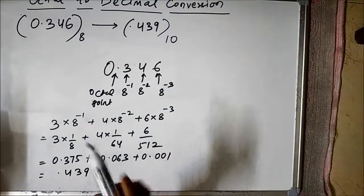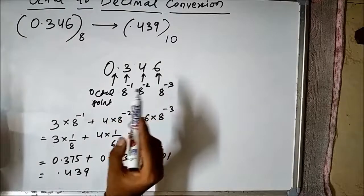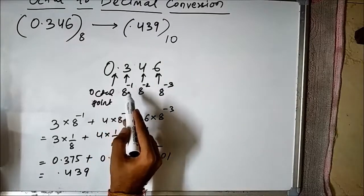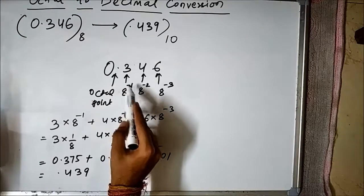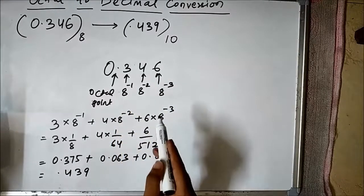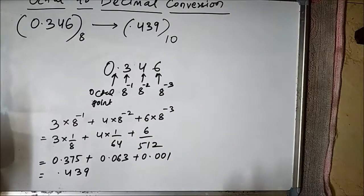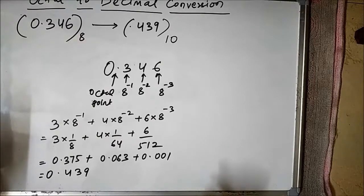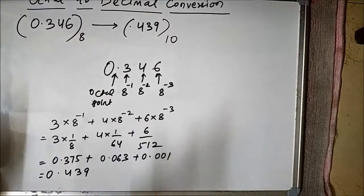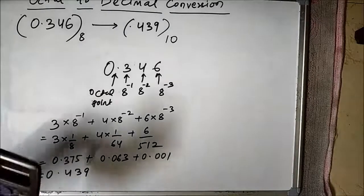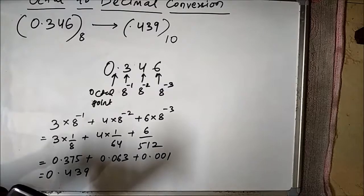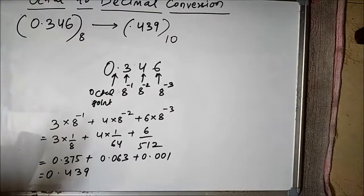We have simply multiplied the respective digits according to their positions with the weight values. The weight values to the right of the octal point start with negative powers from 1: 8 to the power minus 1 for 3, 8 to the power minus 2 for 4, and 8 to the power minus 3 for 6. So here we have discussed how to convert both whole octal numbers and octal numbers with fractional parts into decimal form. I hope you liked this video — please subscribe to Engineering Tutorial for more videos related to electrical, electronics, instrumentation, and communication engineering. Have a great day, thank you very much.